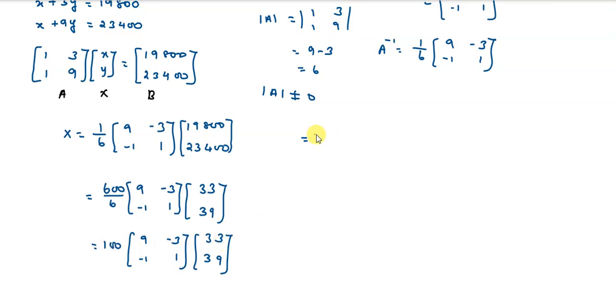So X equals 300 times [9, -3; -1, 1] times [33; 39]. Now we will multiply: 300 times, 9 times 33 is 297 minus 3 times 39 which is 117. That gives 297 minus 117 equals 180. For the second element, negative 33 plus 39 equals 6. Wait, let me recalculate: 9 times 11 is 99 minus 39 equals 60, and negative 11 plus 13 equals 2. So we get 300 times [60; 2].